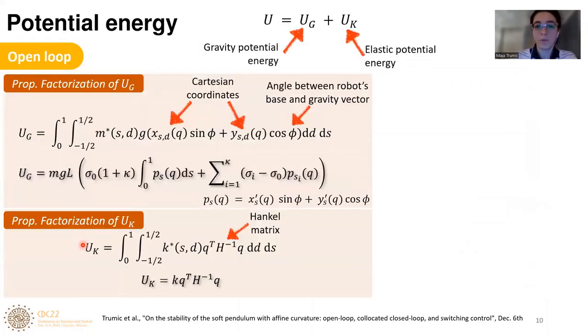For now, let us focus on the particularities of this soft inverted pendulum. The first interesting thing lays in the shape of its potential energy. The total potential energy is made of gravity and elastic potential energy terms. We first show that each term can be conveniently factorized such that robot physical parameters are extracted from the rest of the expression. Gravity potential energy has MGL extracted and elastic potential energy has stiffness k extracted.